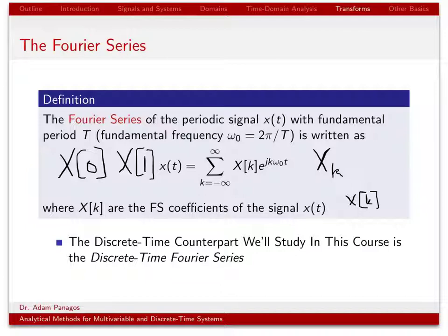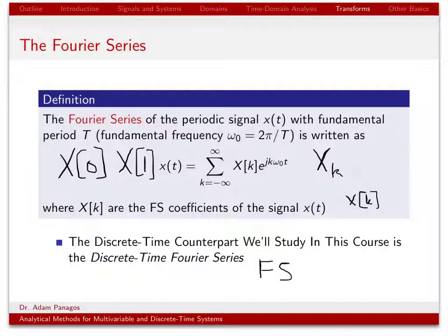This is something we're used to doing — computing Fourier series coefficients and writing X of T in Fourier series form. In this class, we're going to do something very similar, but instead of finding the Fourier series representation of X of T, we'll find the Fourier series representation of the discrete time signal X of K. When we do that, we call it the discrete time Fourier series.